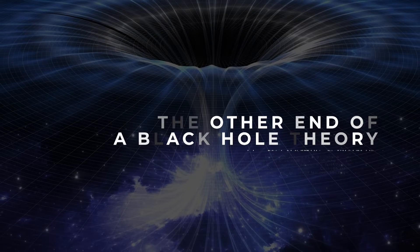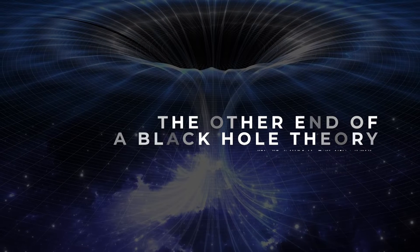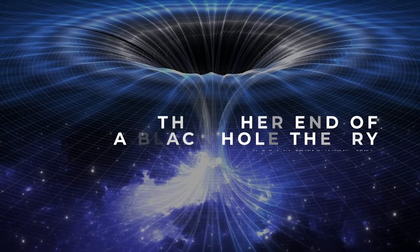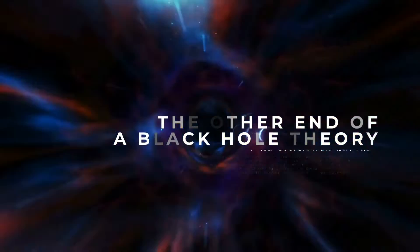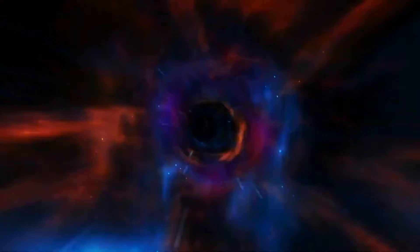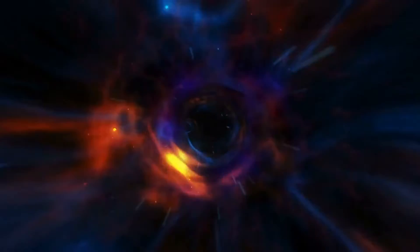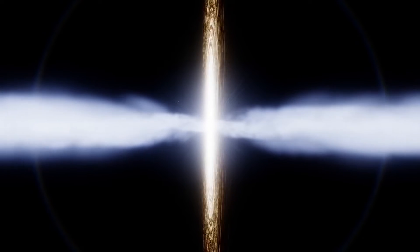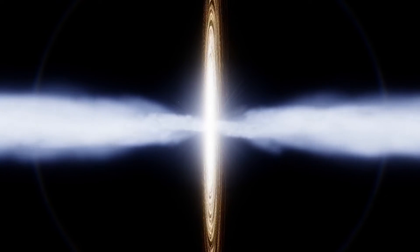The other end of a black hole theory. One theory regarding the structure of white holes is that they are the other end of black holes. The theory continues that these two ends are connected by a wormhole. This means that whatever matter and information is drawn into the black hole will eventually be spit out of the white hole.